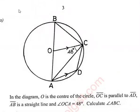We have this question here. In the diagram, O is the center of the circle, OC is parallel to AD, AB is a straight line, and angle OCA equals 48 degrees. Now calculate angle ABC.